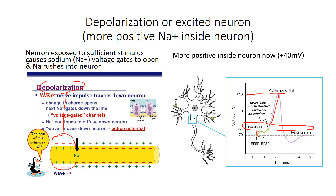If not enough sodium comes in — let's say there was a stimulus that wasn't sufficient enough to reach threshold — a little bit of sodium came in, but not enough to reach threshold. This is just known as a false stimulus; you don't feel a thing. It's an all-or-nothing response: either you have enough sodium to reach threshold and get an action potential, or you don't, and you don't feel anything at all.